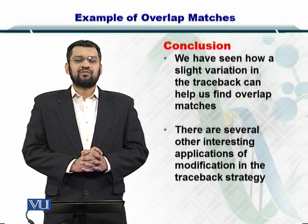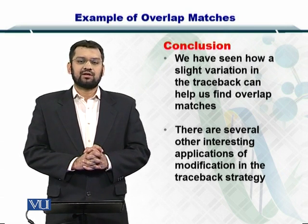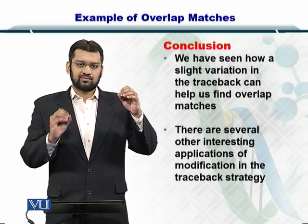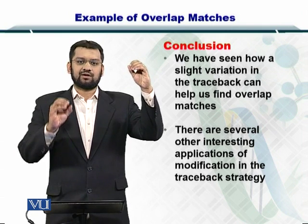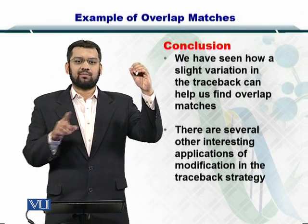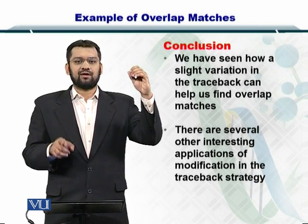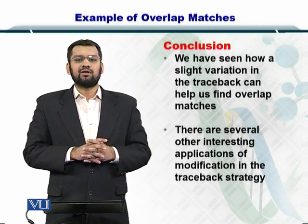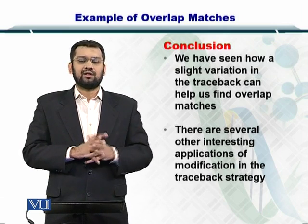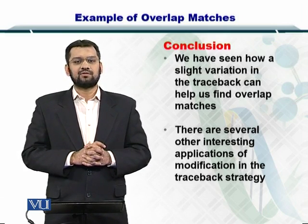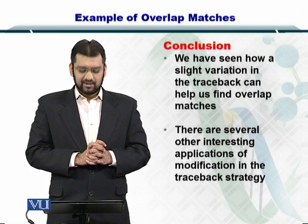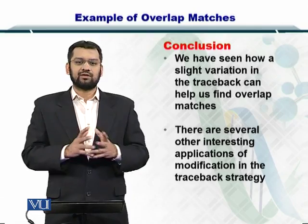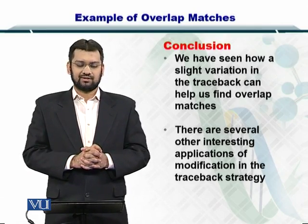In conclusion, we have seen that a slight modification in the traceback strategy—instead of starting from the bottom right to the top left, we start from the maximum score in the bottom row or left column and trace to the zero in the top row or left column—gives us the trailing edges or leading edges. There are other interesting applications of modifications in the traceback strategy as well.